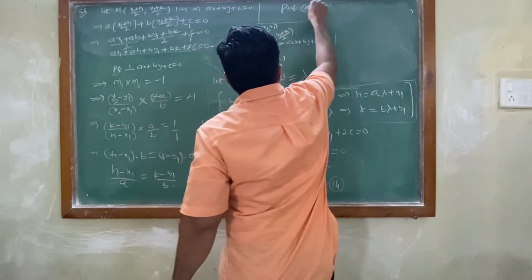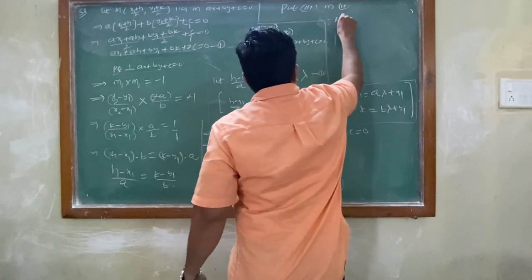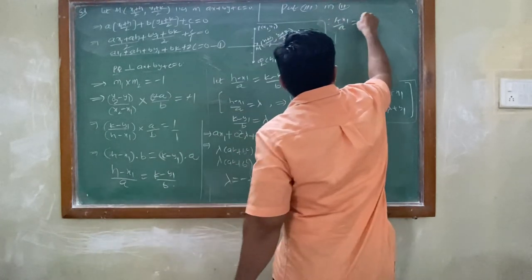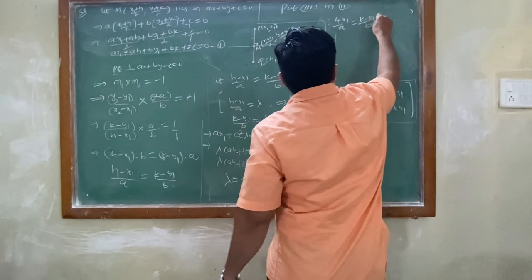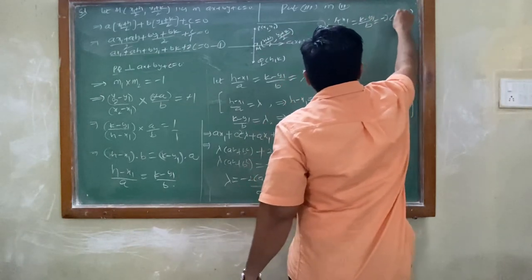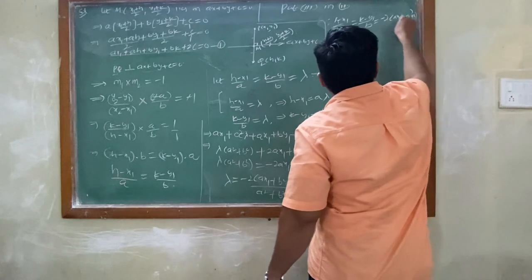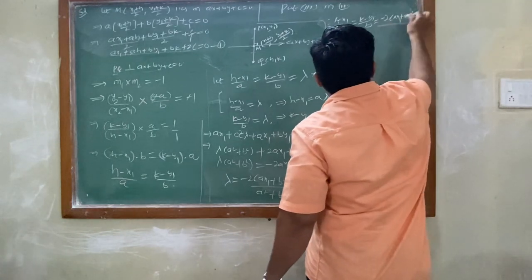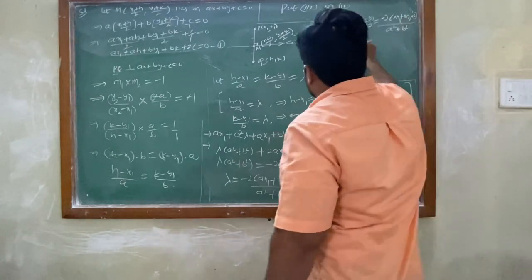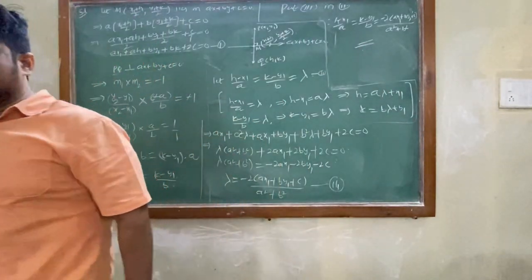Substituting equation 3 into equation 2: (h-x1)/a = (k-y1)/b = -2(ax1+by1+c)/(a²+b²). This is the image formula.